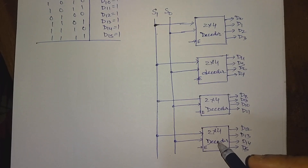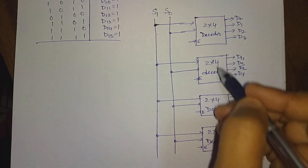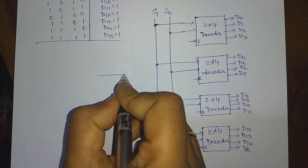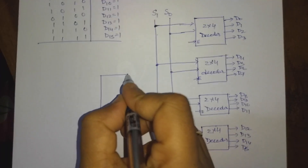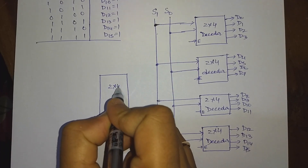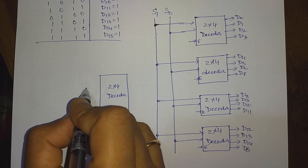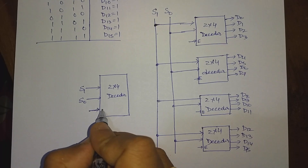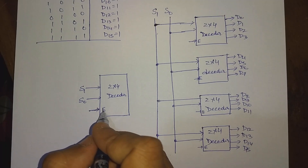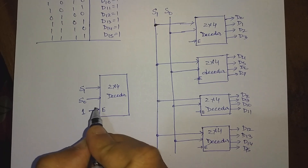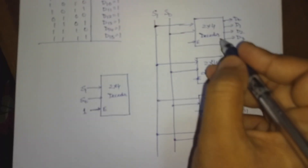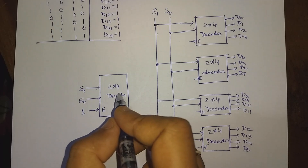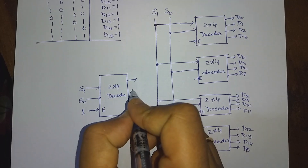Suppose this decoder is working, then the other two will be off. And whenever another one is working, the remaining ones will be off. Now we will use another 2x4 decoder. That means we will have here S1 and S0, and we will have here also an enable input. Here we will use the enable input high value, so that this circuit enables all the other circuits. For all the time we will use enable input equal to 1, that means this circuit will be activated all the time. So it will also have 4 output lines.